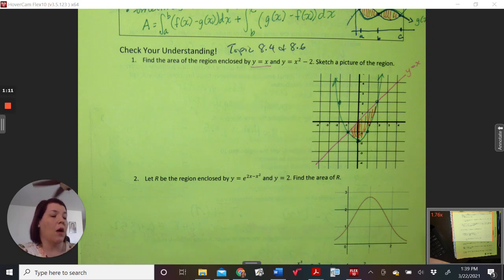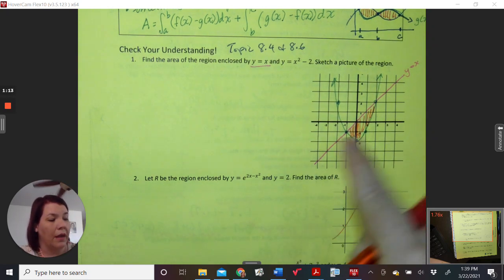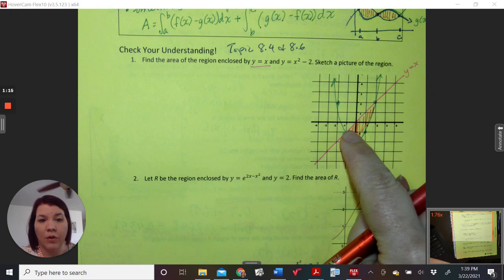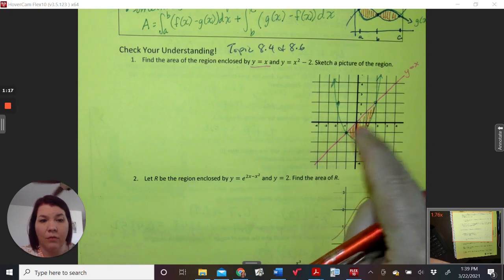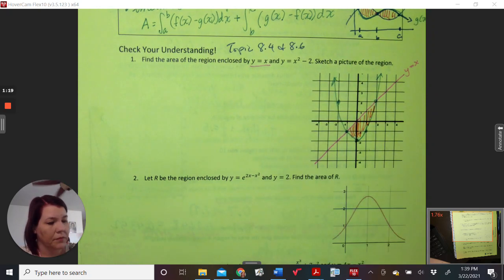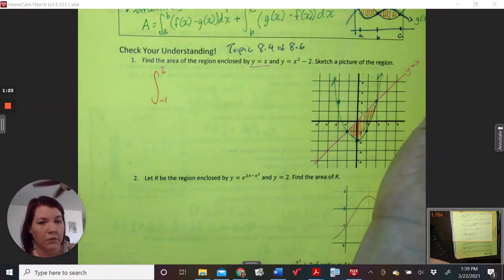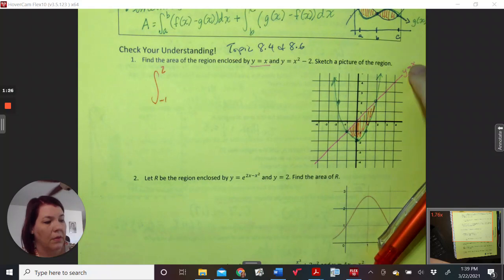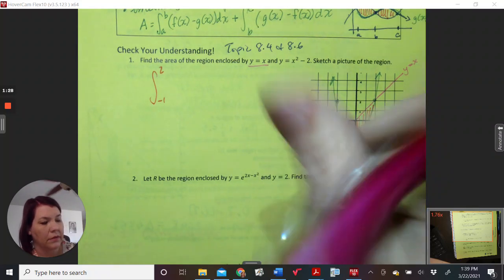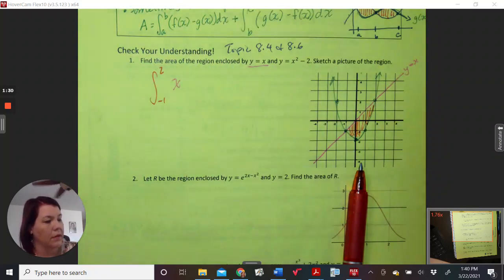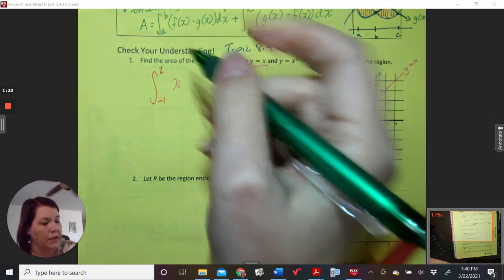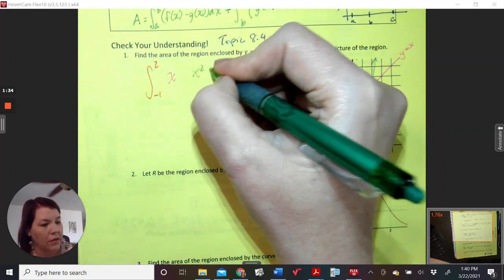So our bounds, a and b, are negative 1 and positive 2 because that's where it intersects on the x. So my area is from negative 1 to positive 2 of my top curve is x. And my bottom curve is x squared minus 2.